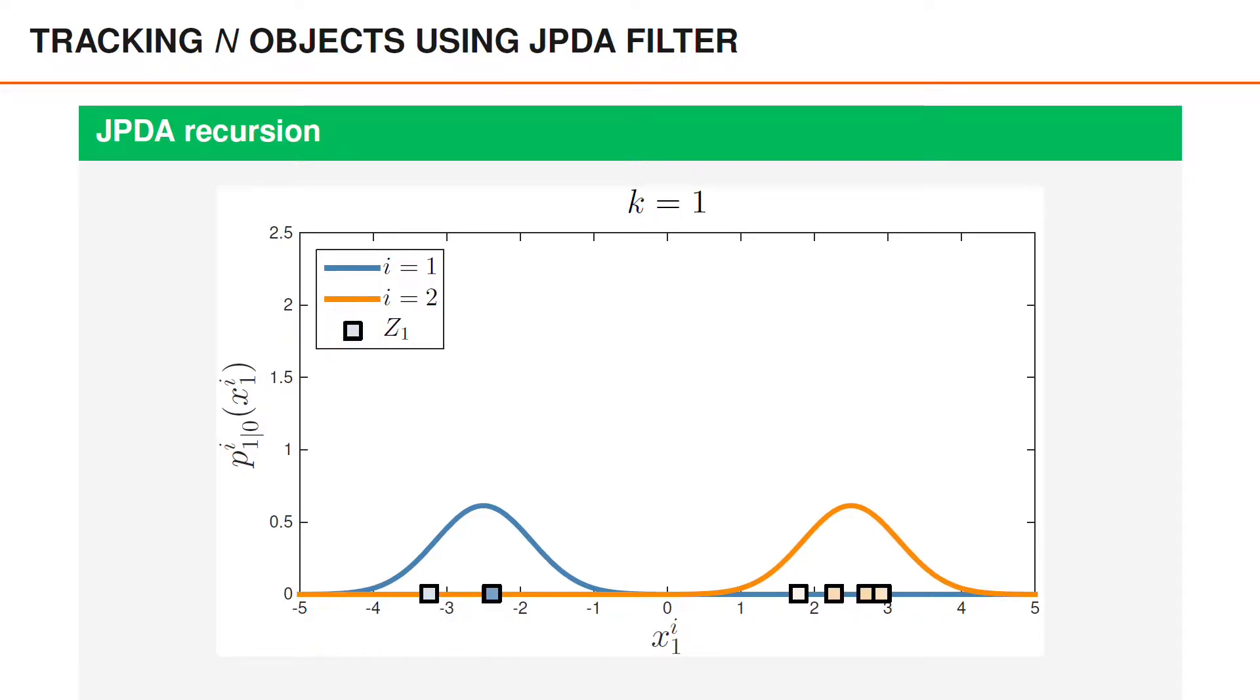In JPDA, we compute marginal association probabilities. This is illustrated by making the measurements square if the association probability to any object is larger than 0.01, and by adjusting the color so that it's proportional to the colors used to illustrate the object. On the left, we have two measurements with non-negligible probability of association to object one. Object one is colored in blue, so these two measurements are blue, and the one closer to the mean is a more intense blue because it has higher association probability.